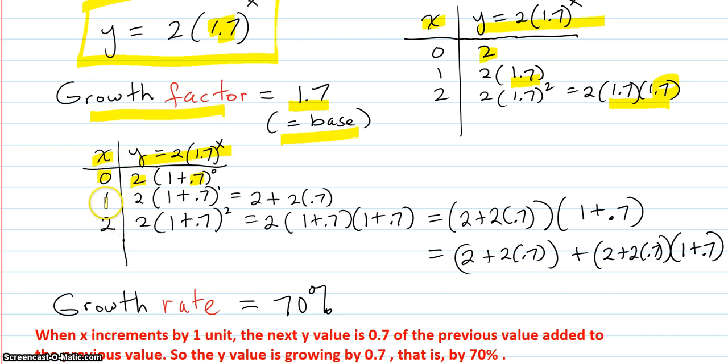For x equals 1, 2 times 1 plus .7 to the 1. If you distribute the 2 in, that equals 2 plus 2 times .7. In other words, the next value here is .7 times the previous added to the previous.